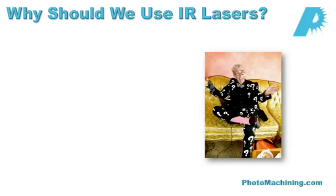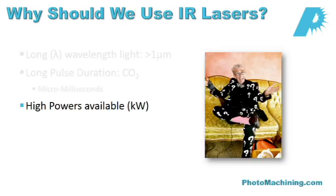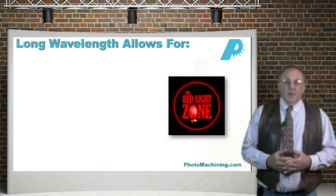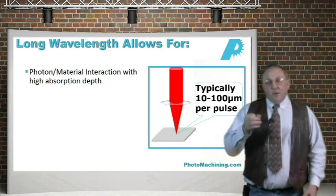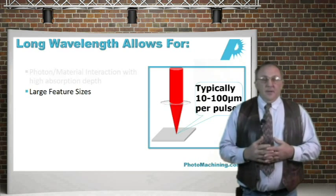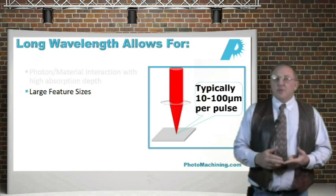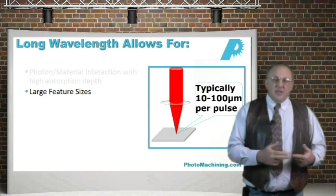Why should we use infrared lasers? Infrared lasers have a long wavelength — one micron or greater — and a long pulse duration; for instance, a CO2 laser can have millisecond or usually microsecond pulse lengths. These lasers are available in power levels anywhere from one to two watts all the way up to several tens of kilowatts, a large range of commercially available output powers. The long wavelength allows a photon-material interaction with high absorption depth, meaning photons travel further into the material before affecting material ejection. This has two consequences: higher processing speed because more material is ejected, but less control and finesse compared to UV lasers.